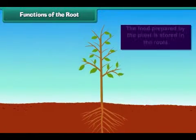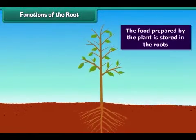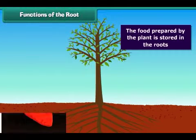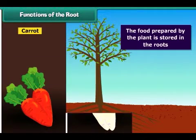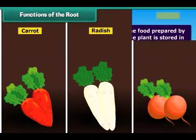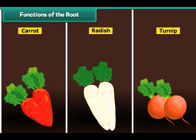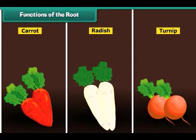Roots also perform the function of storing food in some plants, such as carrot, radish and turnip. The food prepared by the plant is stored in the roots. We eat these roots and get nutrition.